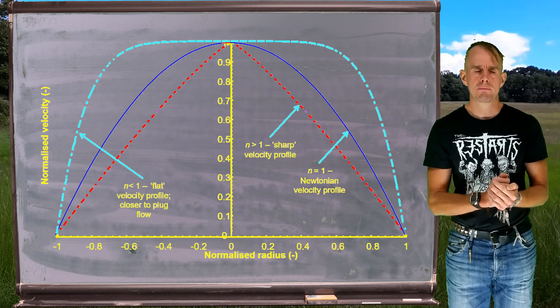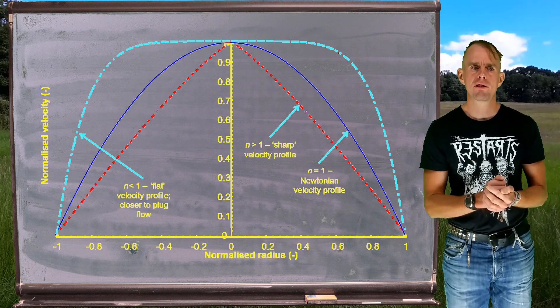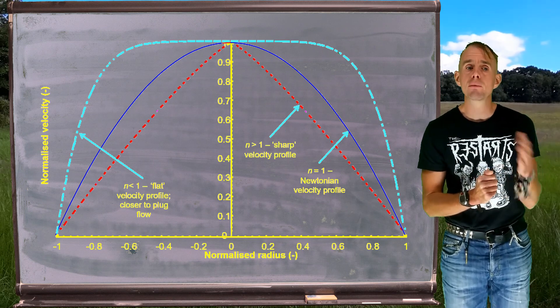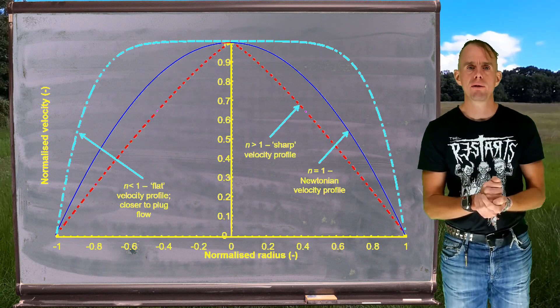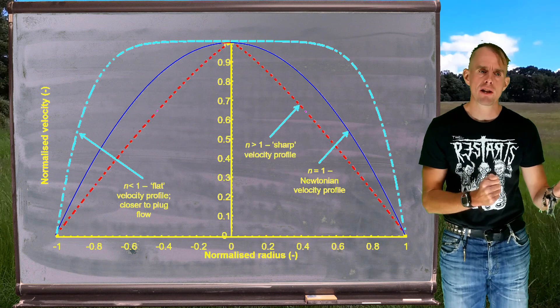So this is all well and good. We have changes to our velocity field, as we might expect, as we change n. And we have two broad trends, one for dilatant fluids, shear thickening fluids, or one for shear thinning fluids.